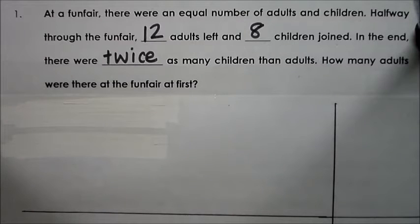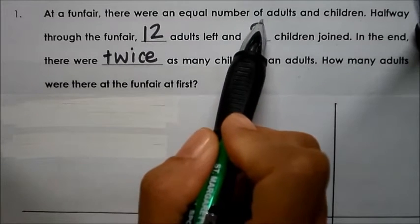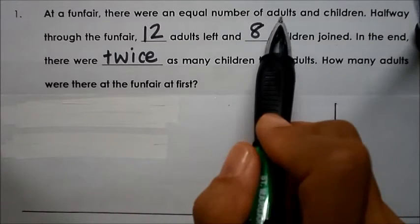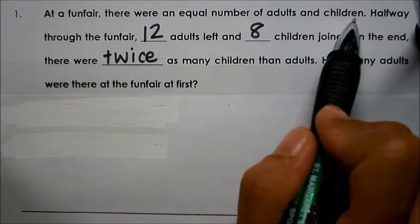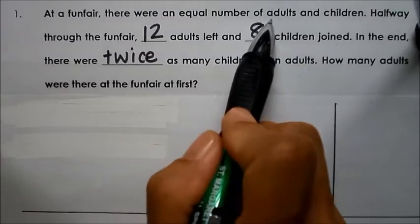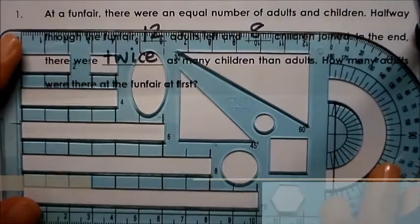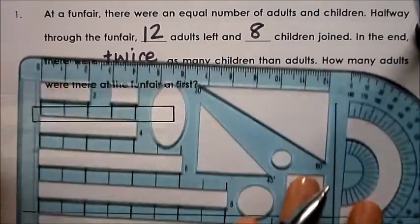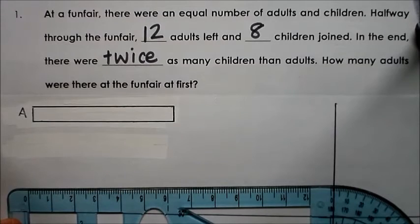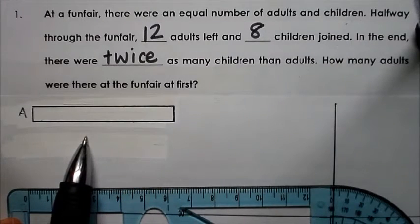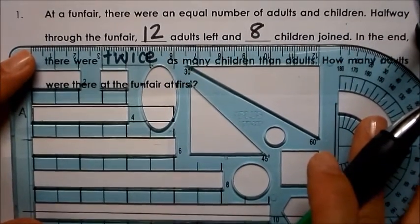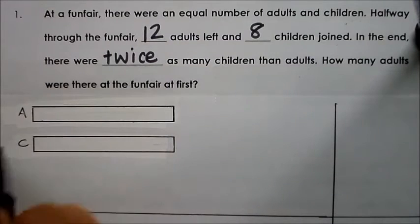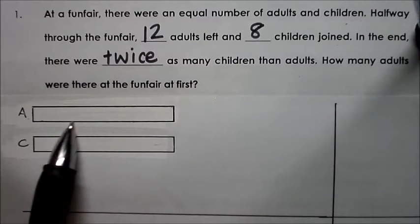Let's understand the question now. At the fun fair, there were an equal number of adults and children. That means if I were to draw a model, both the adults and the children will be the same size. I'm going to draw a model to show the number of adults, and since there's an equal number of children, I'm going to draw the same size for children.